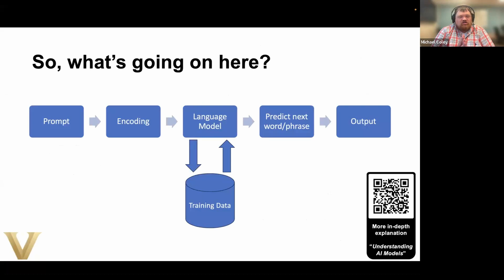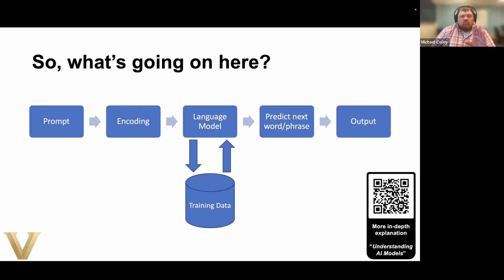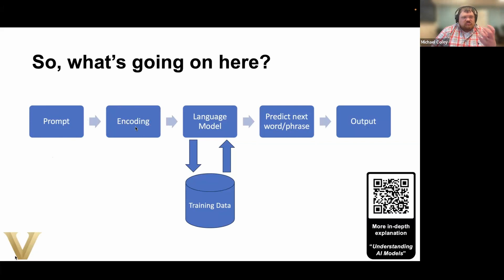So what is going on when you use a tool like ChatGPT? I am not a computer scientist. If you want a really in-depth explanation, the Data Science Institute here at Vanderbilt has had great workshops on AI — back in the spring they had one on understanding AI models that is now on YouTube. Basically, you have some kind of prompt — what you put into the AI tool to get it started — and that prompt is then encoded by the tool into a form it can use.